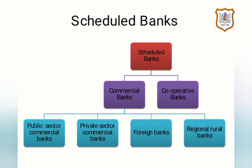What are the types of scheduled banks working in India? The first type is commercial banks and the second is cooperative banks. Under commercial banks there are further subtypes: public sector commercial banks, which are generally owned by the government, and private sector commercial banks, which are owned by private individuals, institutions, or groups of individuals.